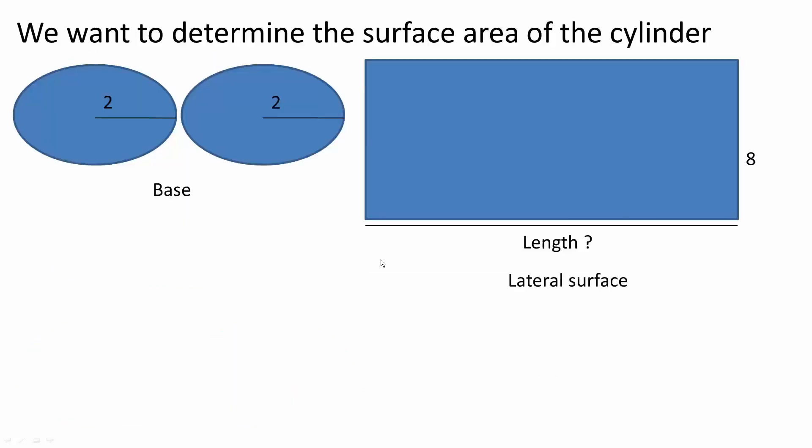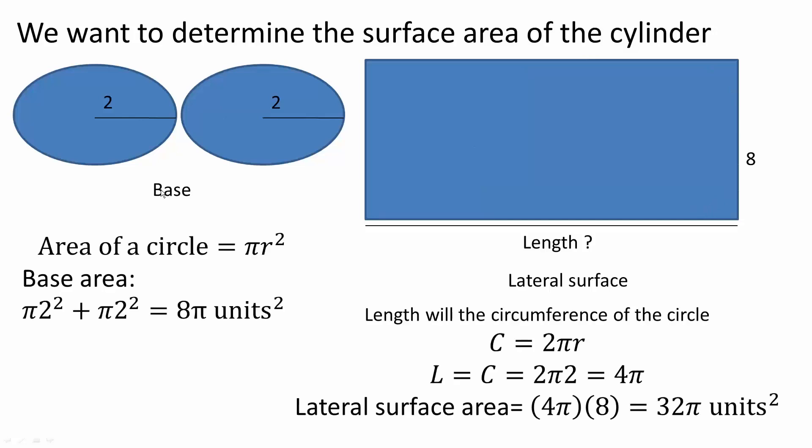Now we want to determine the surface area of the cylinder. We have our two bases and we have our rectangle, the soup can label. The area for the base will be πr², the area of a circle, and we have two bases.